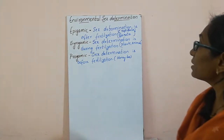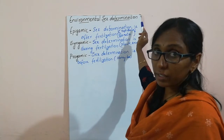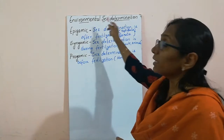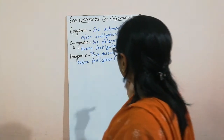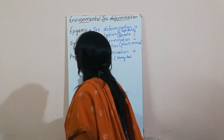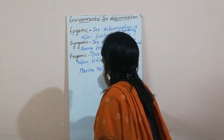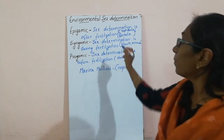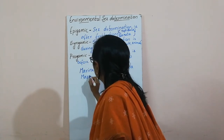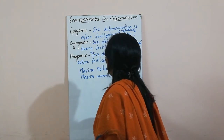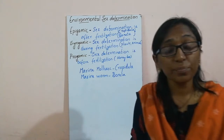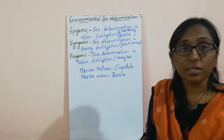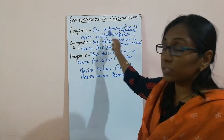Coming to environmental sex determination, we are going to describe about Crepidula, which is a marine mollusc, as well as Bonellia, which is a marine worm. These show epigamic type of sex determination, where environmental sex determination is at work.